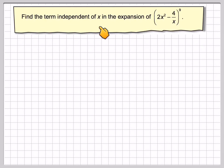Find the term independent of x in the expansion of 2x squared minus 4 over x to the power of 9.